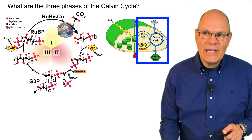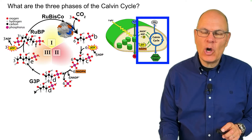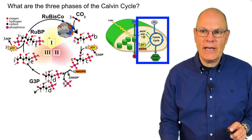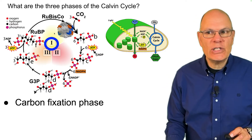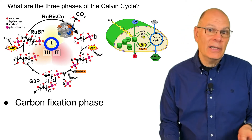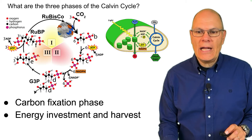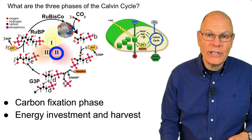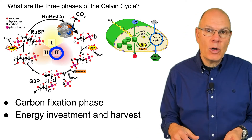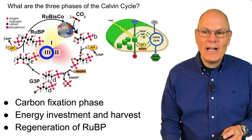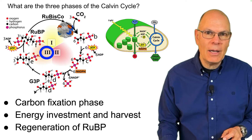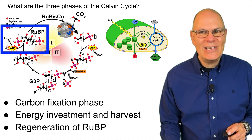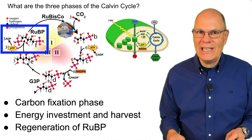The Calvin cycle takes the products of the light reactions and carbon dioxide and uses them to create sugars. That occurs in three phases. The first phase is called carbon fixation, where carbon dioxide gas is brought into the biosphere. That is followed by the energy investment and harvest phase, where matter is pulled out and becomes part of the plant and ultimately part of you. Finally, there's the regeneration of the starting compound. This is a cyclical reaction — the compound RuBP, ribulose bisphosphate, is at the end and at the start.